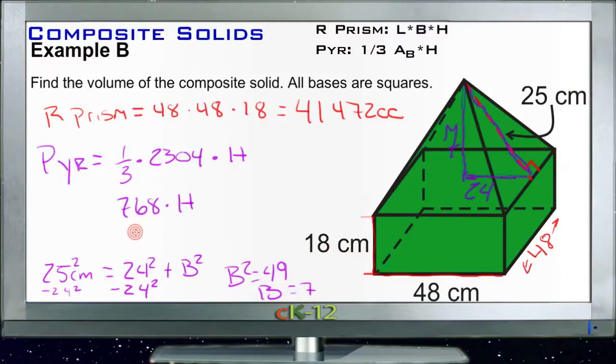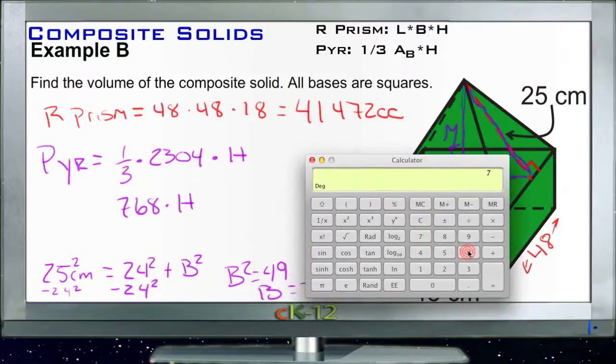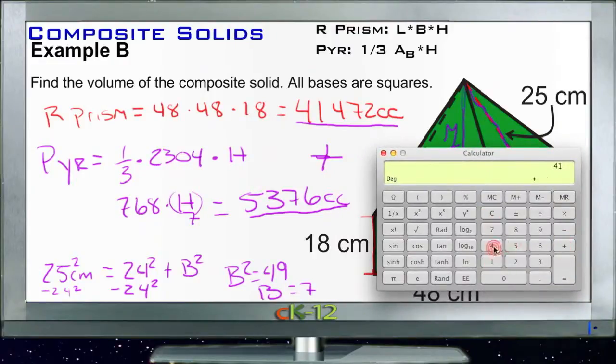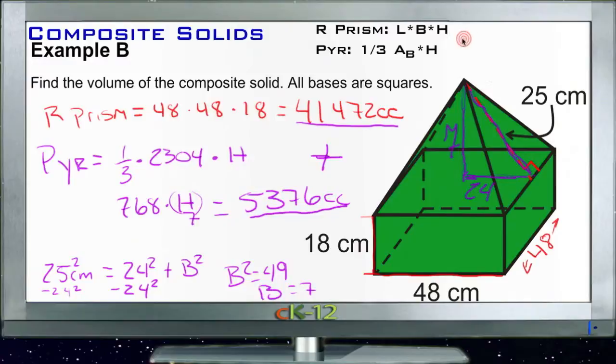So now we can finish this off: 768 times 7. Clear 768 times 7. 5,376. So that means that our total volume for the entire figure is the volume of the rectangular prism plus the volume of the pyramid. So we have our 5376 plus 41472, and that's going to be 46848. So our total volume is 46,848 cubic centimeters.